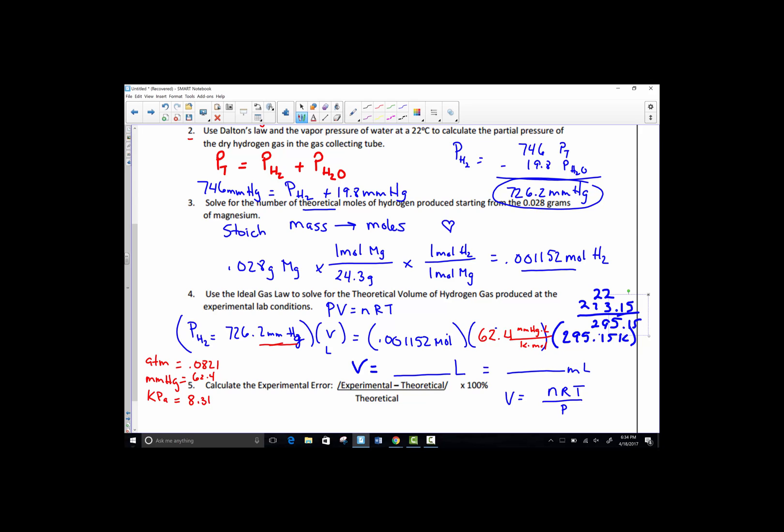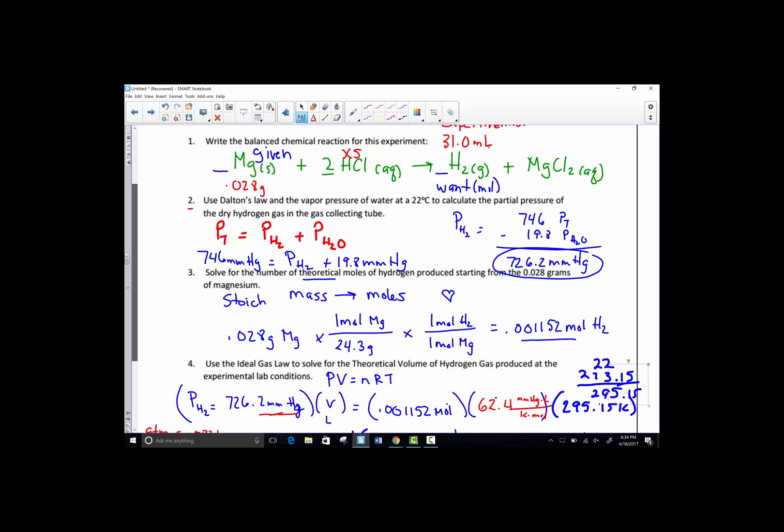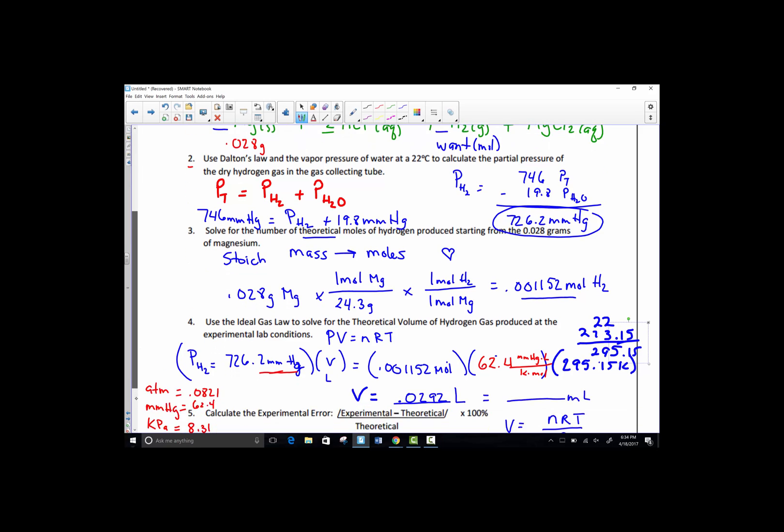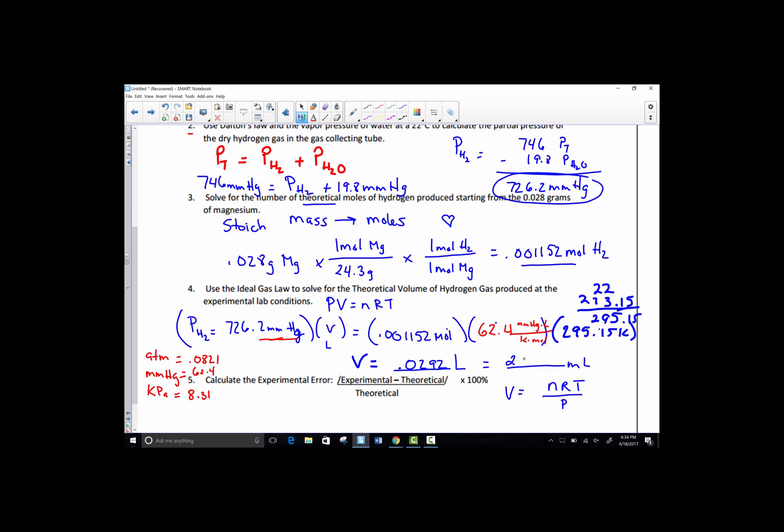0.001152 times our gas constant, 62.4 times the Kelvin temperature of 295.15. Dividing that by 726.2 millimeters of mercury. And if I've hit correctly, my liter value is 0.0292. To make sure that we look at that in terms of milliliters, because that's what we looked at up here. Remember we had 31 mils as our experimental value. Let's put that into a more familiar unit that ends up to be 29.2 milliliters. And that's your volume there, theoretically.